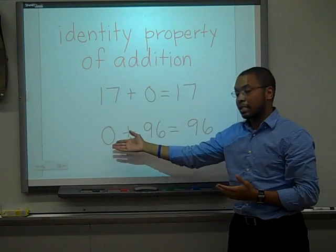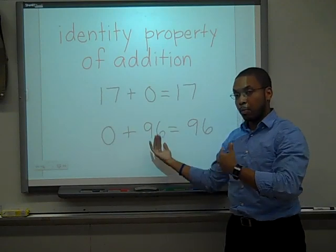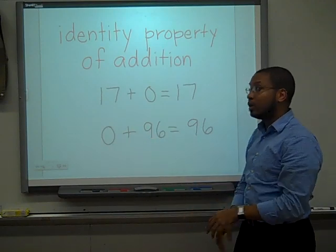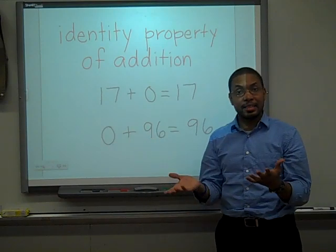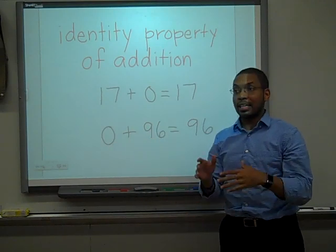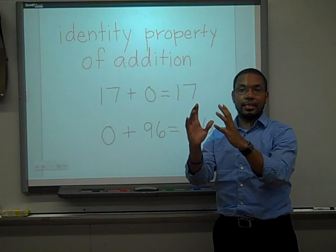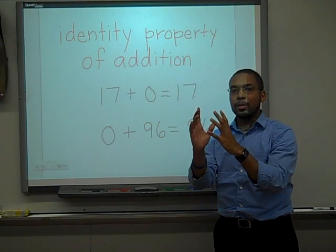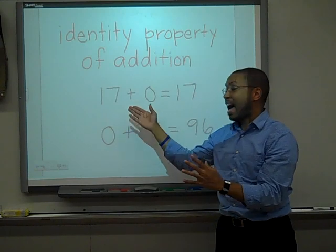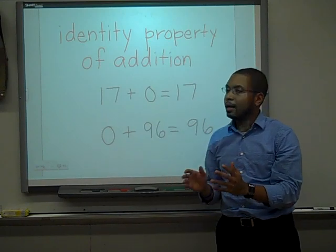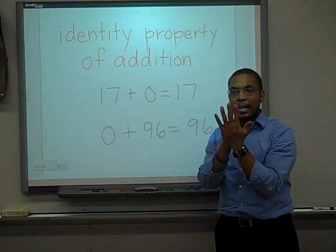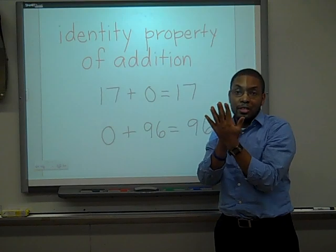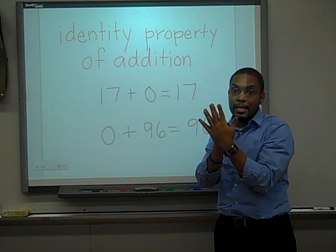The same number added to 0 will give you the same number. 96 plus 0, or 0 plus 96, will give me 96 — because I have 96 and I'm not adding anything to it. And I have 17 and I'm not adding anything to it, so I'll still have 17.